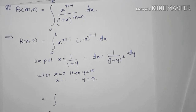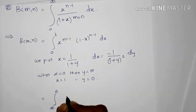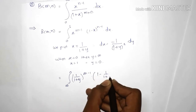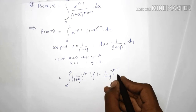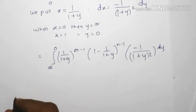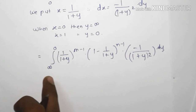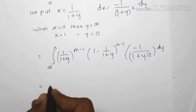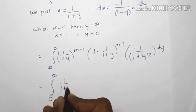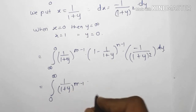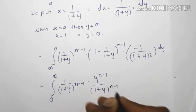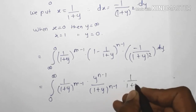Substituting, we get the integral from infinity to 0 of 1 divided by 1 plus y raised to m minus 1, into 1 minus 1 divided by 1 plus y, raised to n minus 1, into minus 1 divided by 1 plus y squared, dy. Taking the minus outside, the limits swap to 0 to infinity. Simplifying the second factor gives y raised to n minus 1 divided by 1 plus y raised to n minus 1, into 1 divided by 1 plus y squared, dy.